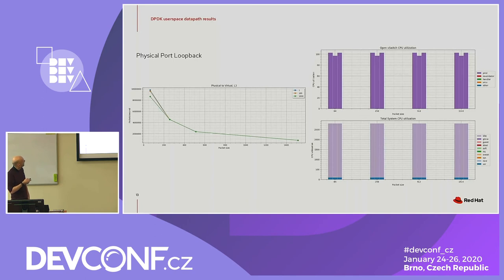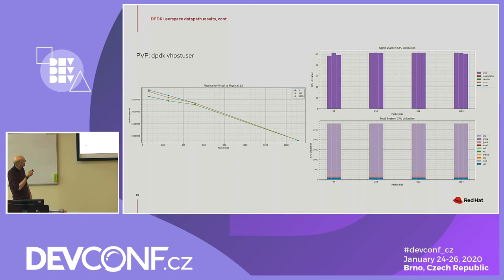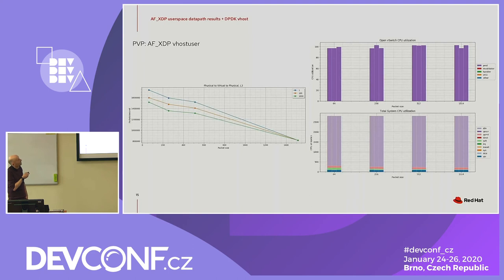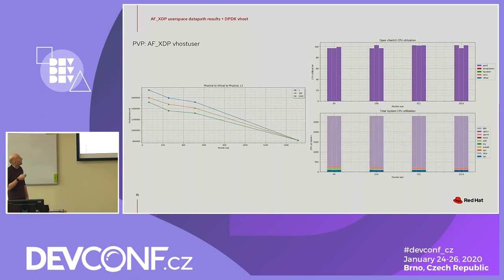Now the same data for DPDK. For physical port to physical port, you get roughly 10 million packets per second. For PVP, it's roughly 2.5 to 2.8 million packets per second. DPDK uses vhost-user as the interface to the virtual machine because DPDK and vhost are both user space data paths in OVS and can be mixed. In this scenario, the DPDK vhost-user is used to loop back the packets, giving better performance — roughly about 1.6 million on average for 100 flows.